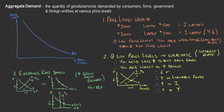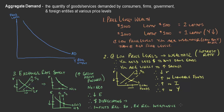A decrease in the real exchange rate means the dollar is depreciating. When the dollar depreciates, you can purchase less foreign currency with your dollar — that makes imports relatively expensive and exports relatively inexpensive. This increases exports in the economy.